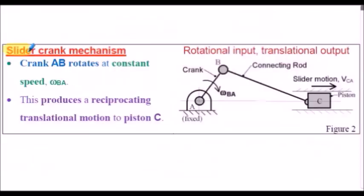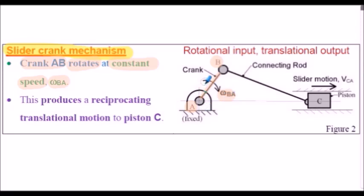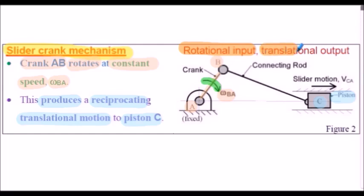Here's a diagrammatic view of a slider-crank mechanism. Crank AB rotates at a constant angular velocity or angular speed denoted as omega BA. This produces a reciprocating translational motion in piston C. So essentially we have a rotational input from the crank and a translational output from the piston.